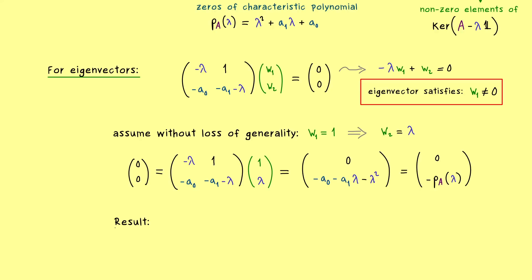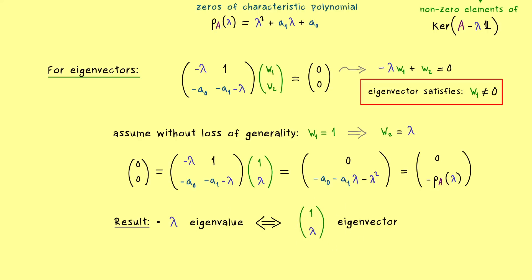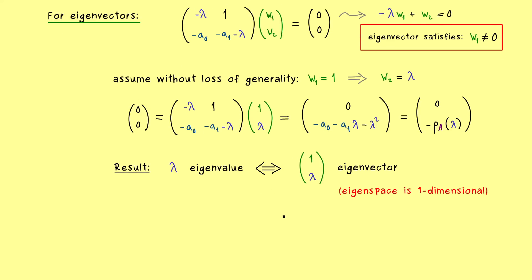We can state the result: every eigenvalue gives an eigenvector of the form (1, lambda), and the corresponding eigenspace is always one-dimensional. This is important when we look at the four cases for the two-dimensional ODE system — cases 1a, 1b, 2a, and 2b. In cases 1a and 1b we had two different eigenvalues; in 1a they are real, in 1b they are complex. In cases 2a and 2b there is only one eigenvalue. Since our eigenspaces are always one-dimensional, case 2a — where A is diagonalizable with one eigenvalue — cannot occur for our second order ODE.